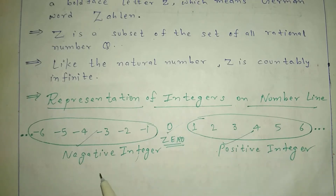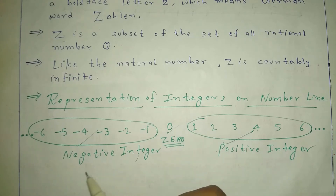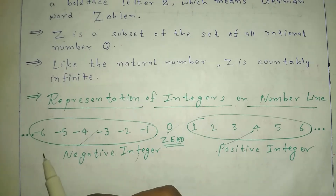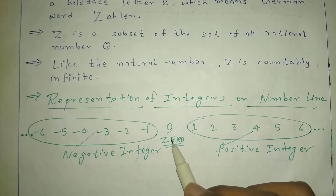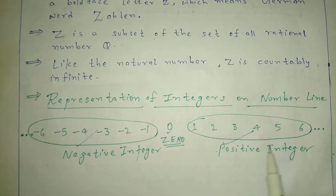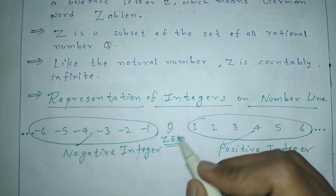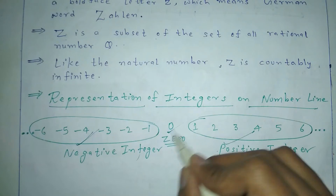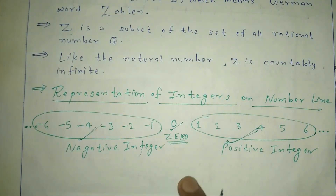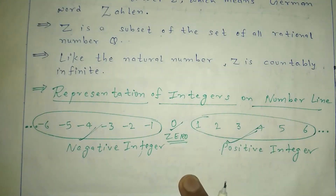On the number line, we have negative integers from -1 to negative infinity on the left, zero in the middle, and positive integers 1, 2, 3 going to infinity on the right. These three sets — negative integers, zero, and positive integers — together form the set of integers.